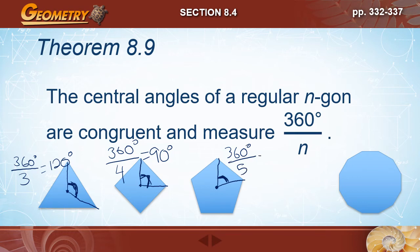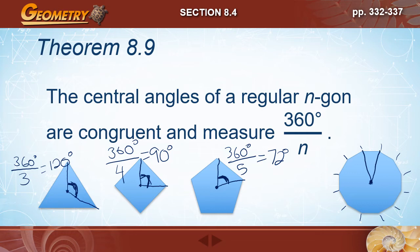For a regular pentagon, the central angle is 360 ÷ 5 = 72 degrees. For a dodecagon (12 sides), counting the sides confirms 12, so the central angle is 360 ÷ 12 = 30 degrees. That's how you find the measure of the central angle of any regular polygon.